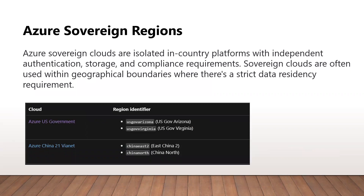Azure also supports what is called sovereign regions, which support greater compliance for specific markets. These regions operate isolated instances of the Azure cloud computing platform that run dedicated hardware and isolated networks. These regions even have their separate base URLs, so the standard URL portal.azure.com does not take you to these regions — you have a dedicated URL to access them.